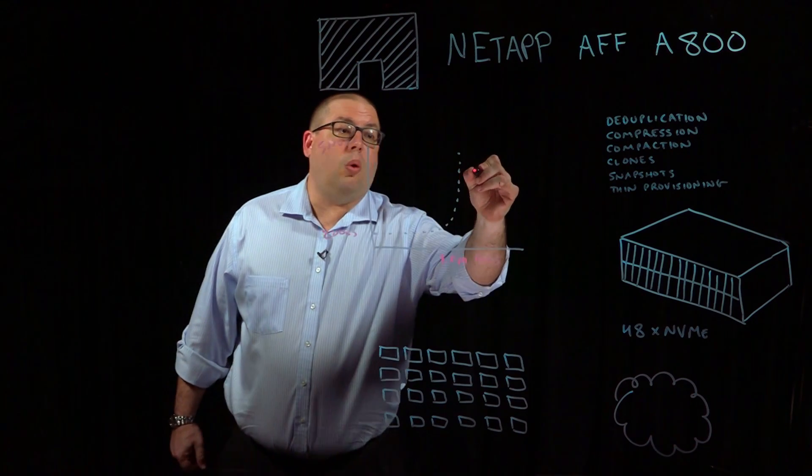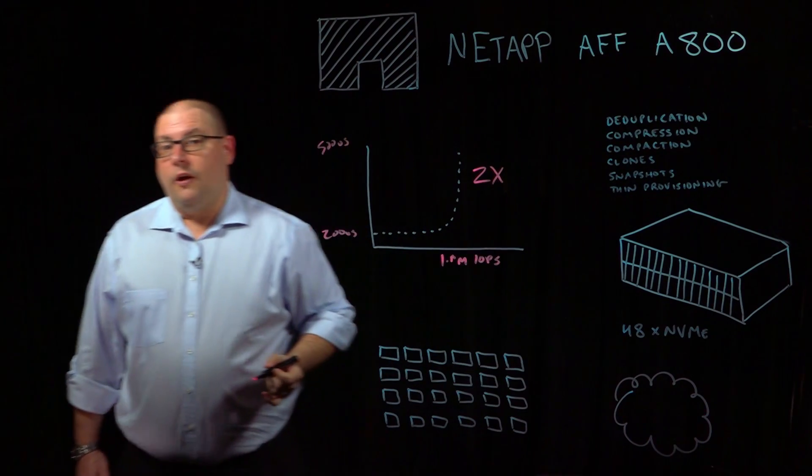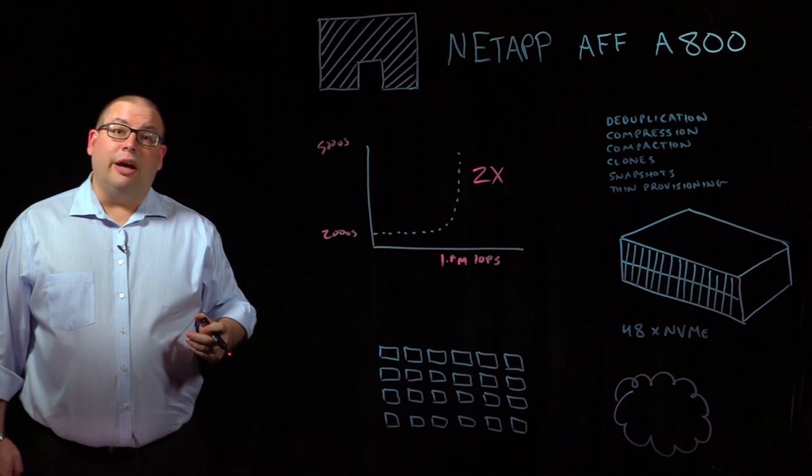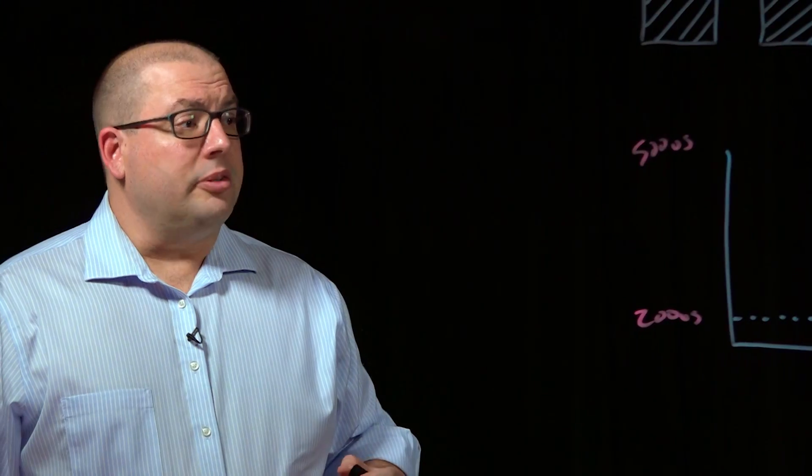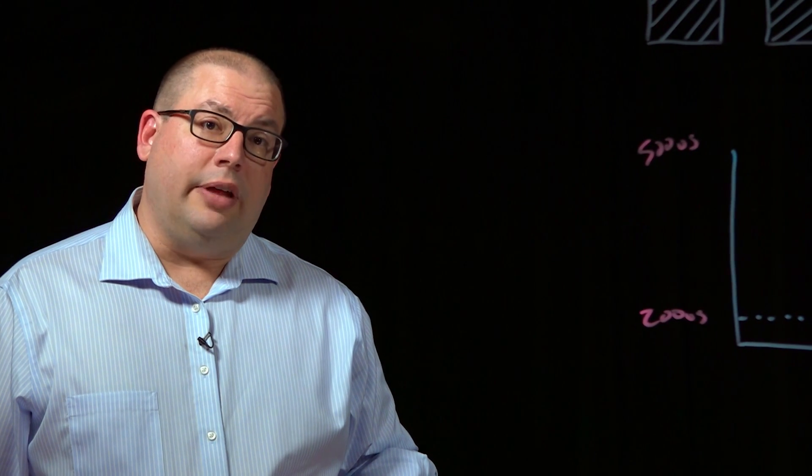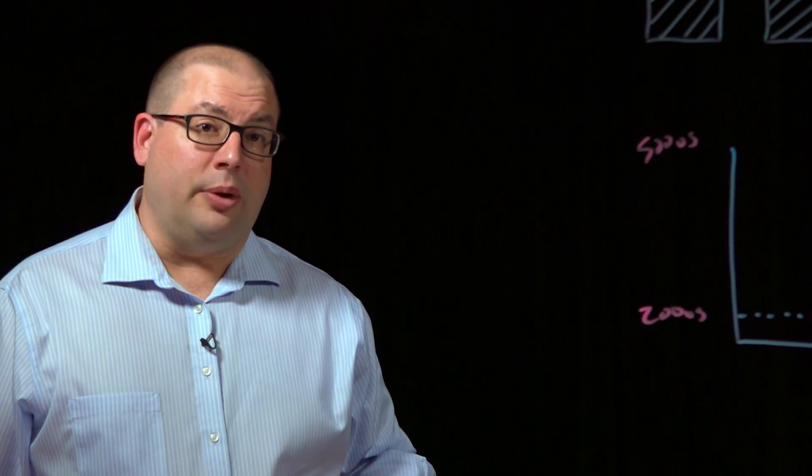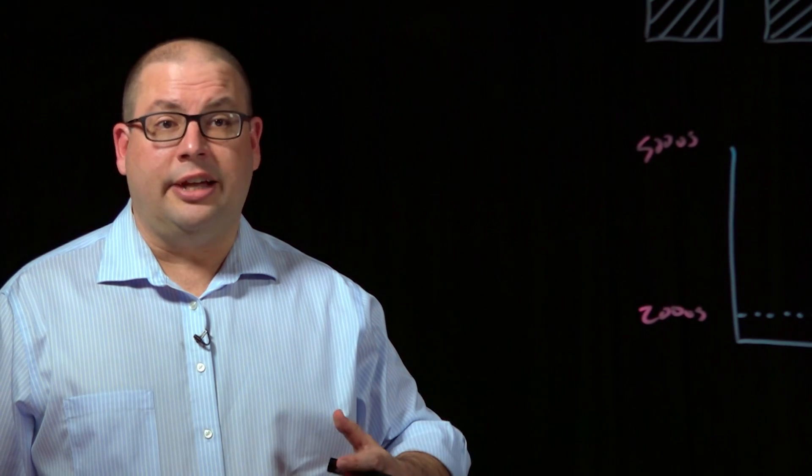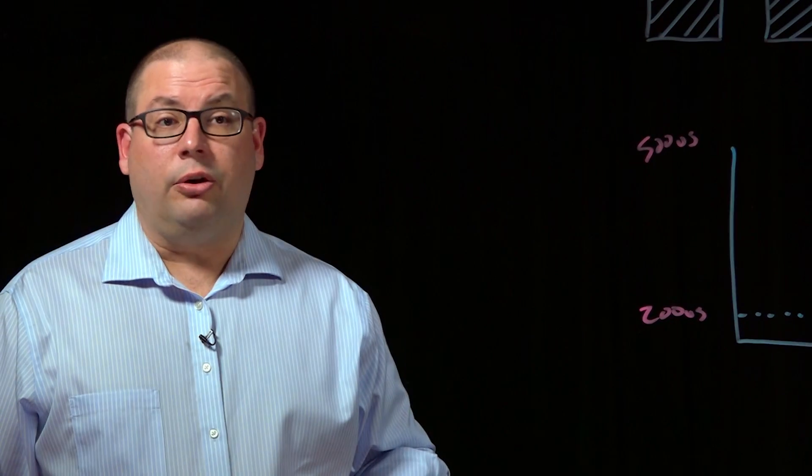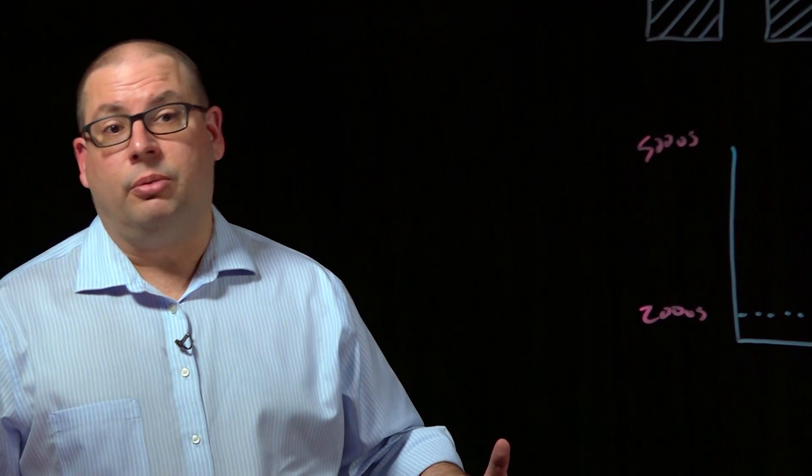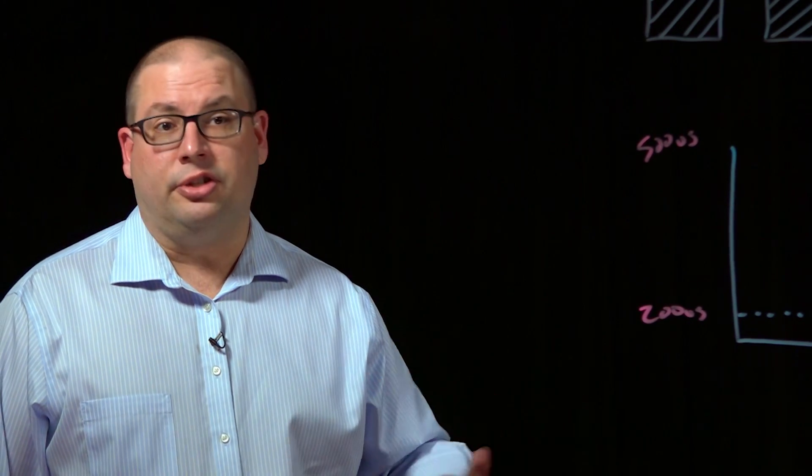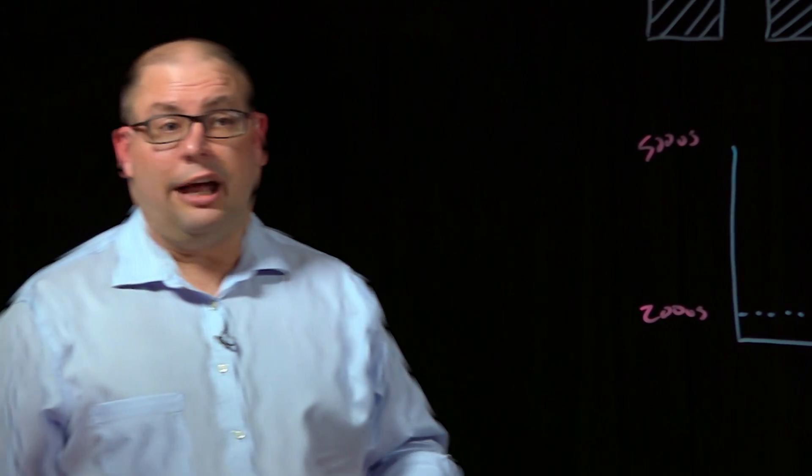We see approximately twice the amount of throughput possible with NVMe over FC compared to FC. From a sequential performance perspective, the A800 can do 25 gigabytes per second sequential reads. This is important in today's analytics and machine learning. The faster you can move data through your machine learning pipeline, the more iterations and training you can do, resulting in a better accurate model.